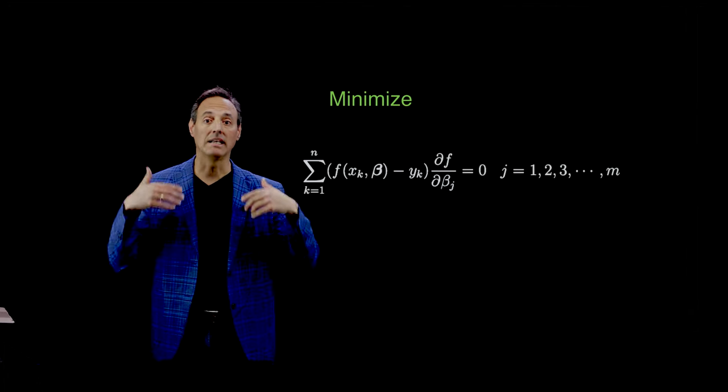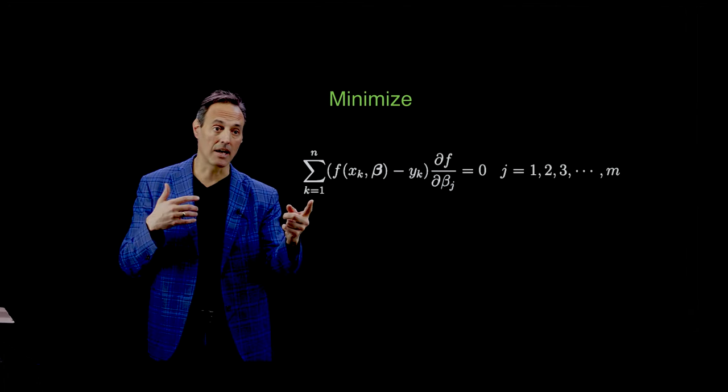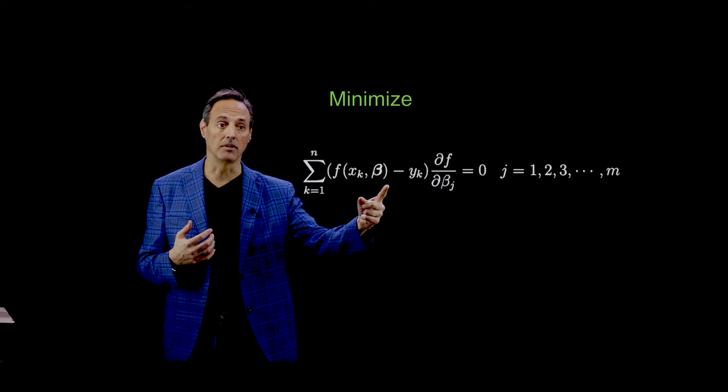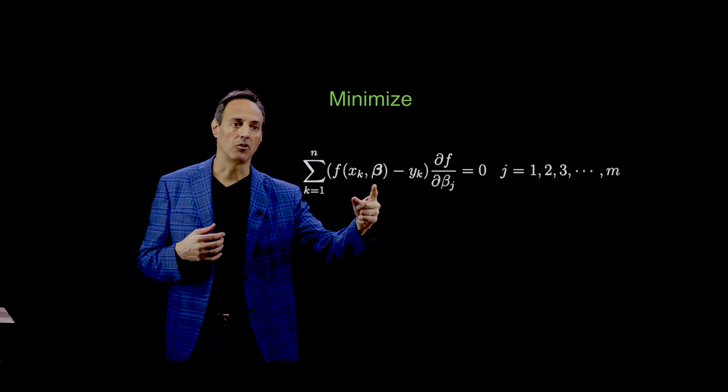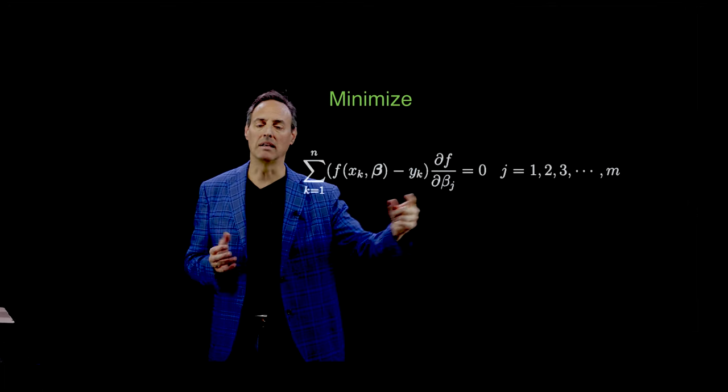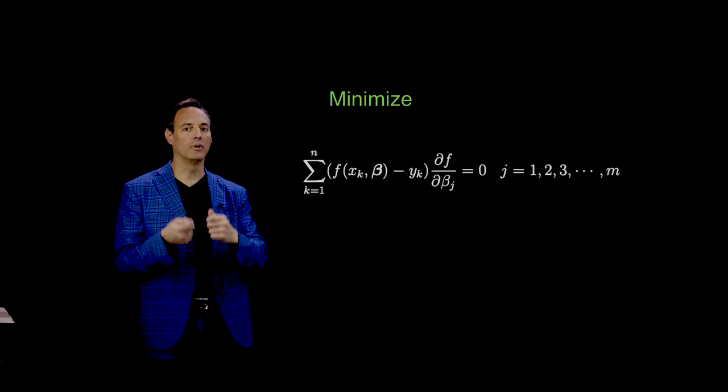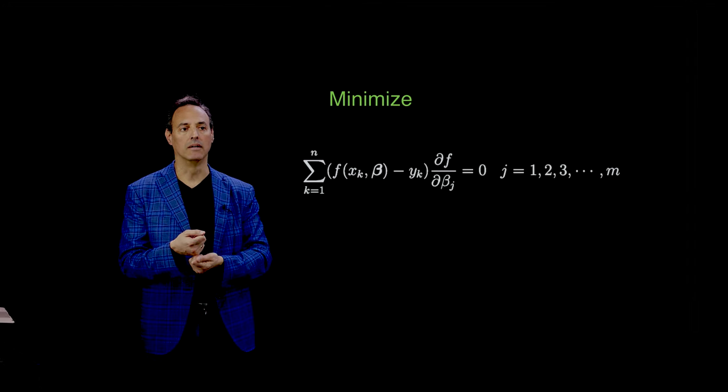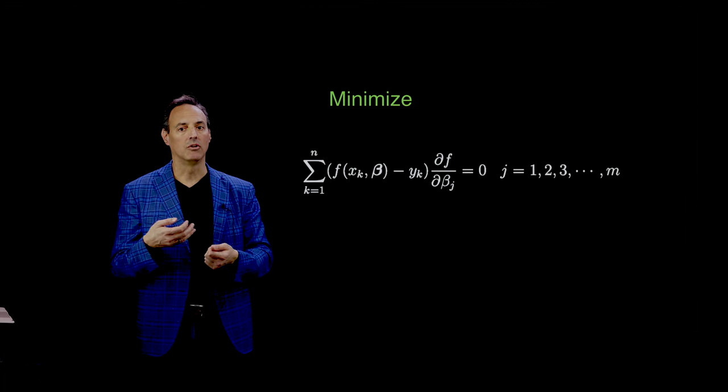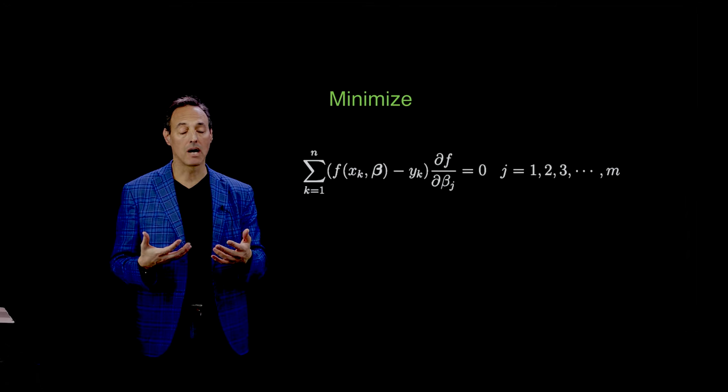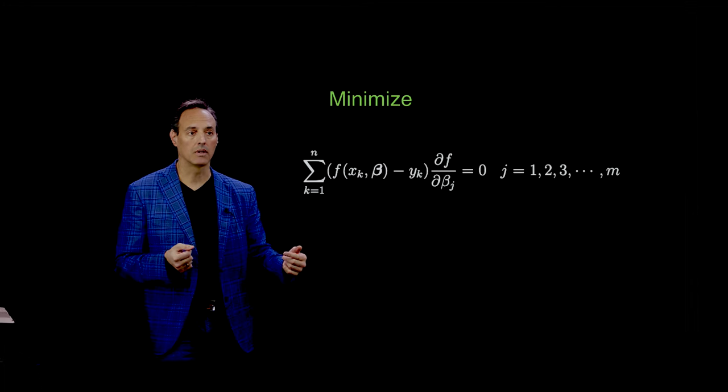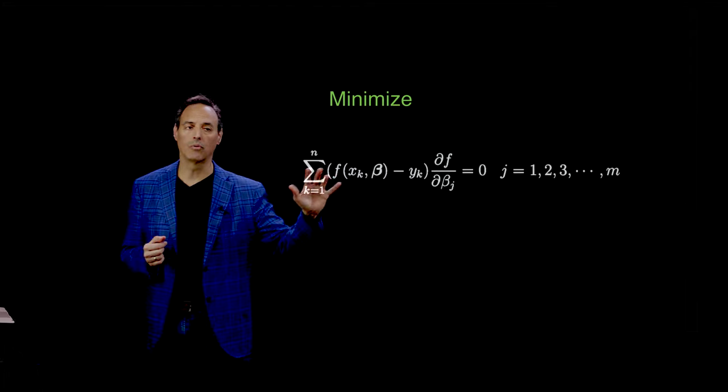You'd minimize in the same way as before, taking some error metric which is the distance between my model and actual data. I'd take the sum of that error. To minimize, I take the derivative. If I took the difference squared and the sum, the derivative gives you f minus y_k, then df/dbeta. You have to compute the derivative of function f with respect to parameter beta.